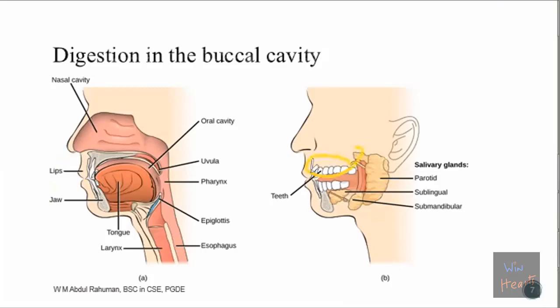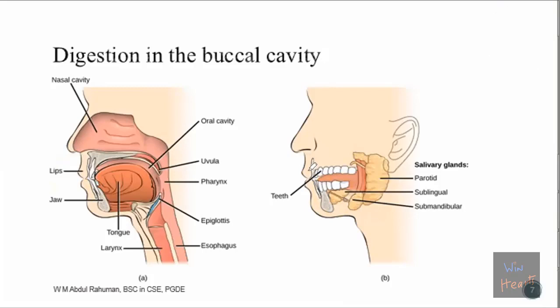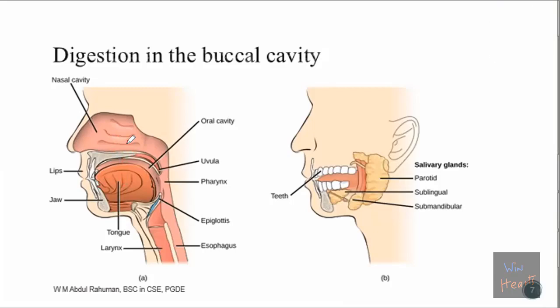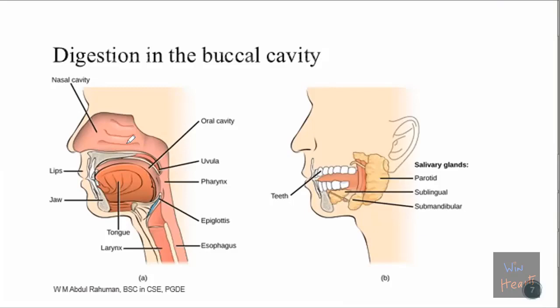The teeth are responsible for chewing. When chewing goes on, the tongue also helps by pushing the food up. This helps make the food into a sort of a ball, mixed with saliva, and we call this a bolus. This bolus will help us move the food to the next section.